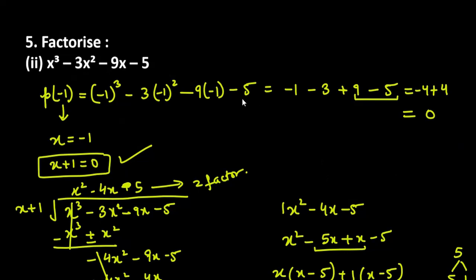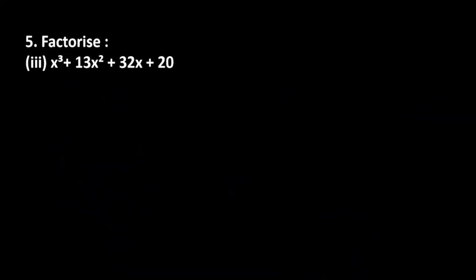Now let's move to the third part: x cube plus 13x square plus 32x plus 20. One thing to note here is that if we put any positive value like 1, all terms are getting added, so no positive value will give 0. Putting larger positive values will give even bigger values. So we should try minus 1 first.